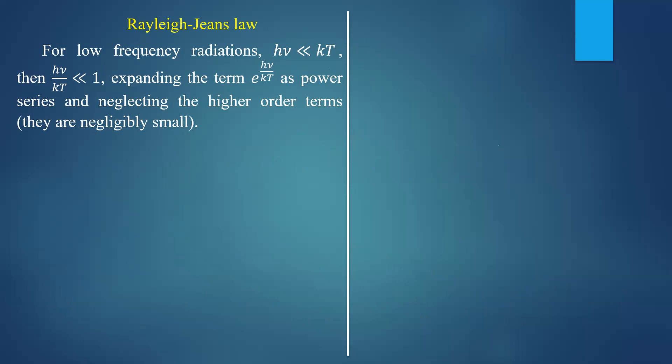For low frequency radiations, hν is going to be very, very less than kT. If frequency of the radiation is very small at a finite temperature, then definitely hν is going to be much less than kT. Then hν/kT will be less than 1. You expand the term e^(hν/kT) as a power series and neglect the higher order terms, which are negligibly small.